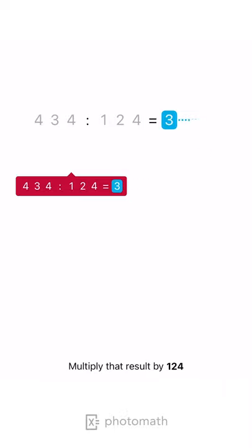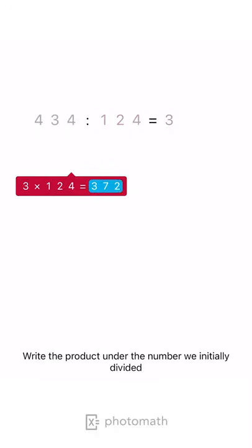Multiply that result by 124. Write the product under the number we initially divided.